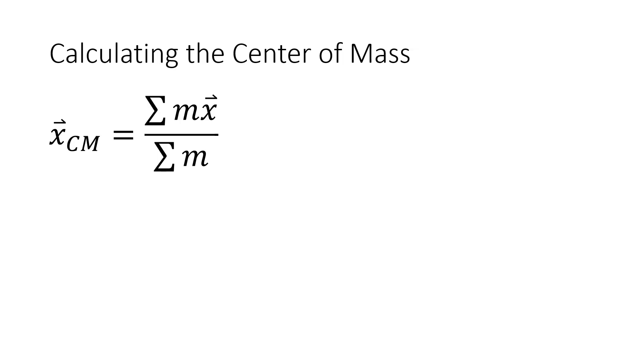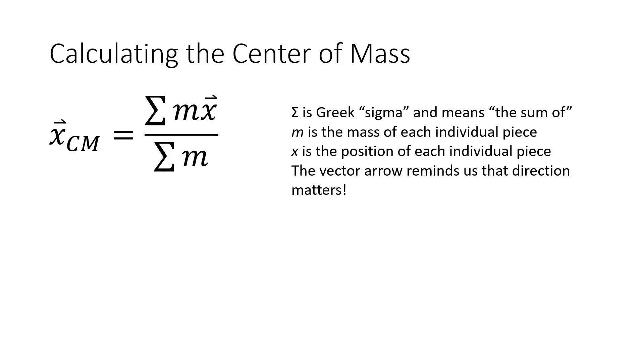We have an equation for finding the center of mass. To find the position of the center of mass, you sum the mass times the position of all the different pieces of the system, and then divide that by the sum of the masses. If you're not familiar with that symbol, that letter is the Greek letter sigma, which means the sum of. M is the mass of each individual piece, and x is the position of each individual piece on a number line. The vector arrow over the x reminds us that direction matters, so being to the right of zero would be positive and being to the left of zero would be negative.